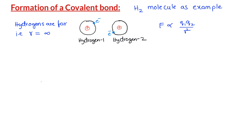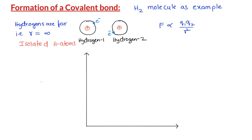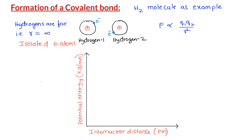In other words, there is no force of attraction or repulsion between the hydrogen atoms. The hydrogen atoms are said to be isolated from each other. I am going to plot a graph with the combined energy of the two hydrogen atoms on the y-axis and the distance between the two hydrogen atoms on the x-axis. I will assign 0 kJ of energy for the two hydrogen atoms when they are isolated from each other. This is our reference point.